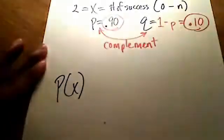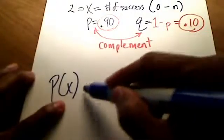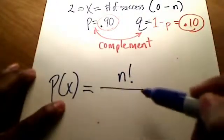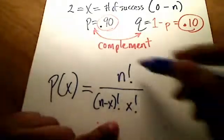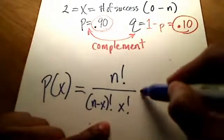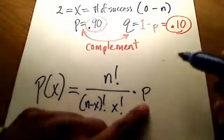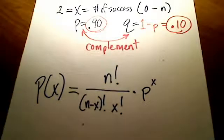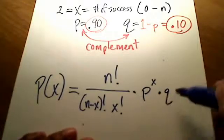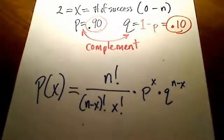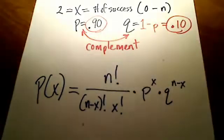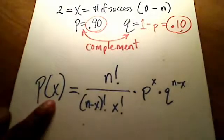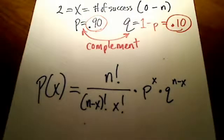The probability of making x successes is equal to n factorial over n minus x factorial times x factorial - that's a combination formula - times the probability of success raised to the x power, times the probability of failure raised to the n minus x power. All three of these things get multiplied together, and that will give you the probability of x successes out of n trials.